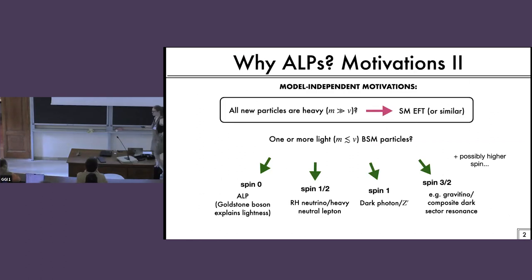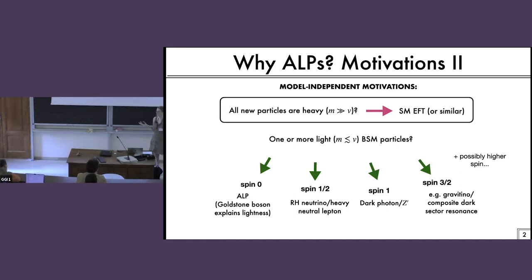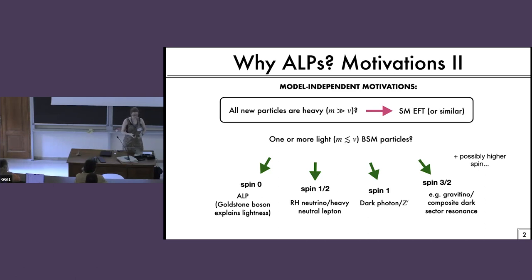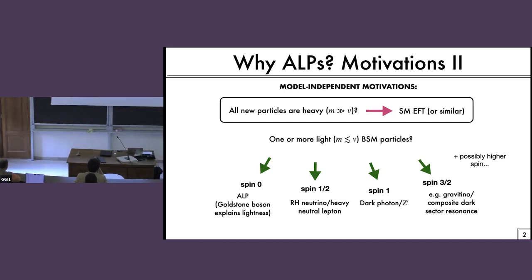If we think about any kind of BSM physics which has a general mass scale somewhere above the UV scale — since we haven't seen it yet — we could still possibly get an idea that it's there by hoping that it's produced some of these light spinless particles. And of course, there are many motivated explicit models that you can focus on. But instead of focusing on specific models, if we're looking for new physics beyond the standard model, then there are only a few options, really. Sounds like people can hear me.